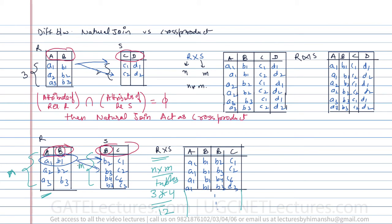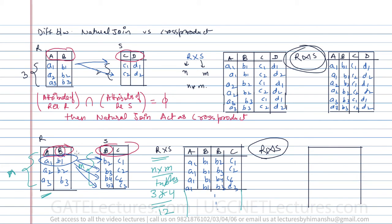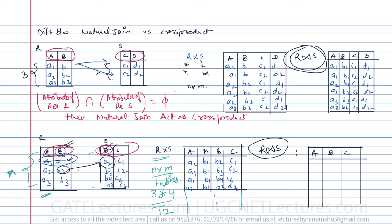But if we take R natural join S, it creates a difference. Since B is the common attribute, we take it only once, giving three attributes: A, B, C. We combine only those tuples where the B values match. B1 appears in R but not in S, so it's excluded. B2 matches, giving (a2,b2,c1). B3 appears twice in S, giving (a3,b3,c2) and (a3,b3,c3). So we only get three tuples.